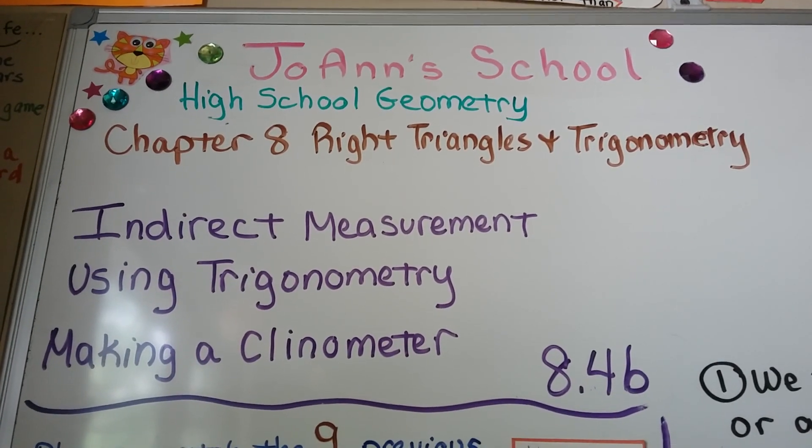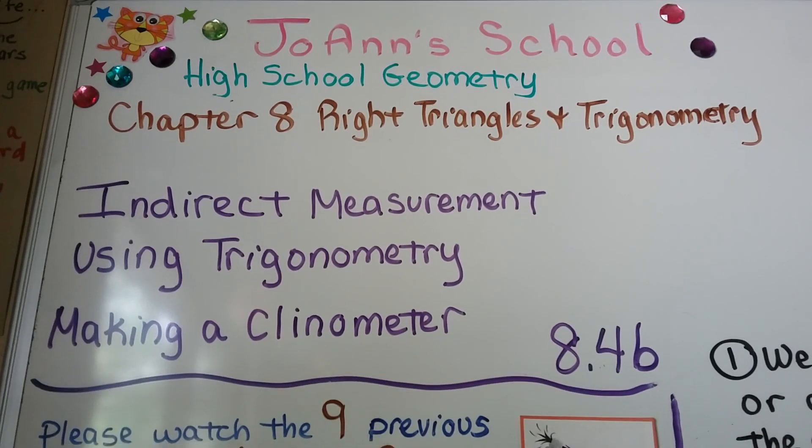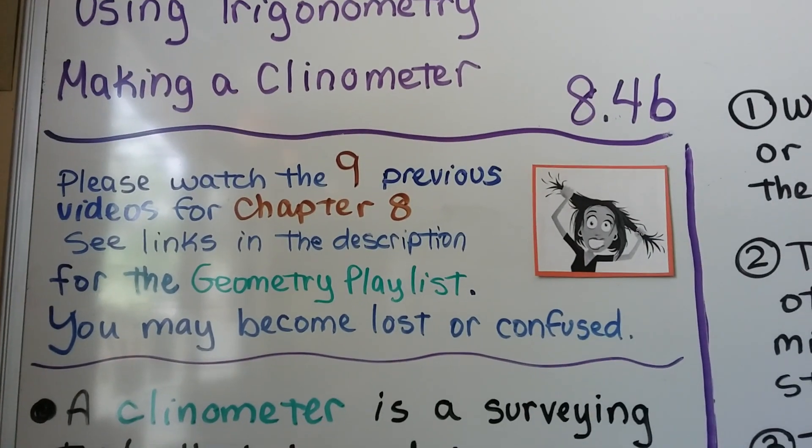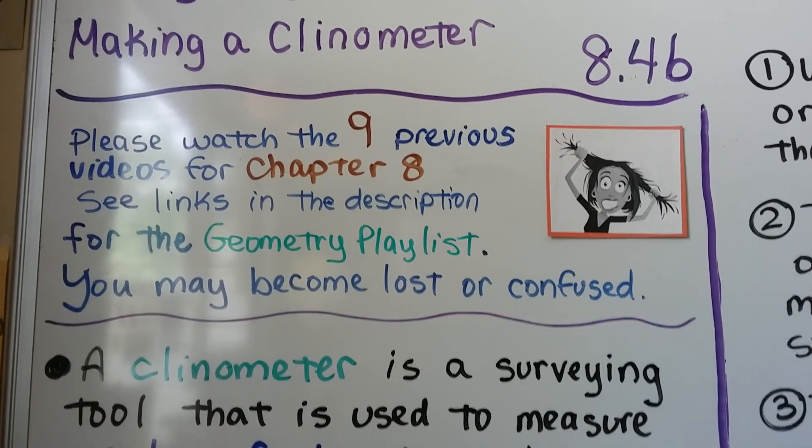Indirect measurement using trigonometry and making a clinometer. This is 8.4b, and if you've missed the previous nine videos for Chapter 8, they're in the geometry playlist linked in the description.